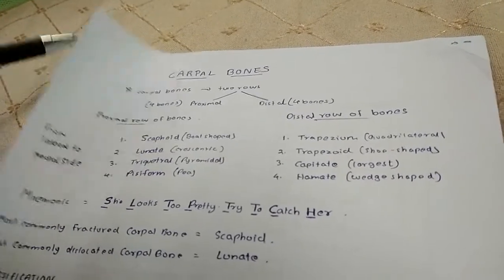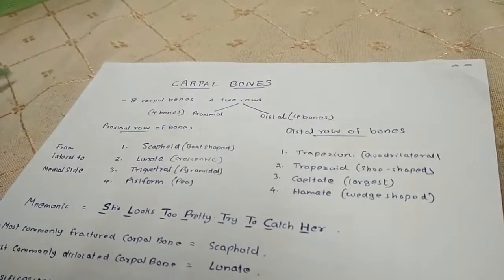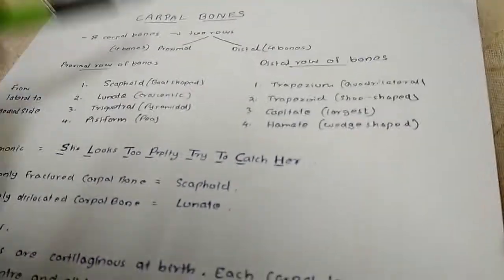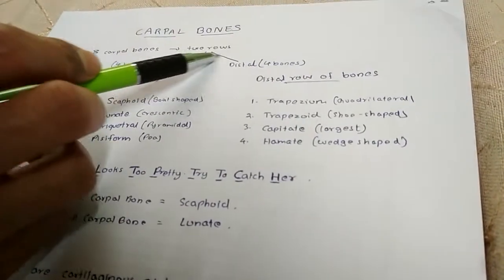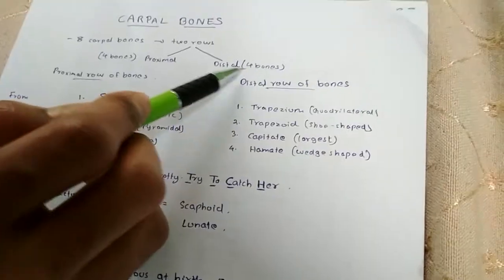Good morning all. Today we will learn about carpal bones. There are eight carpal bones in our body which are arranged in two rows, proximal and distal. Proximally there are four bones. Distally also there are four bones.